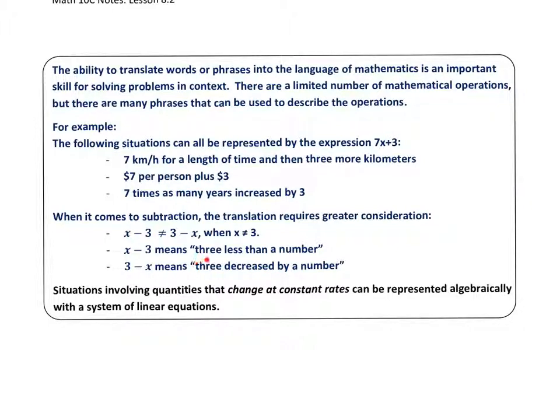x minus 3 means 3 less than a number. But if you have 3 minus x, you're taking 3 decreased by a number.